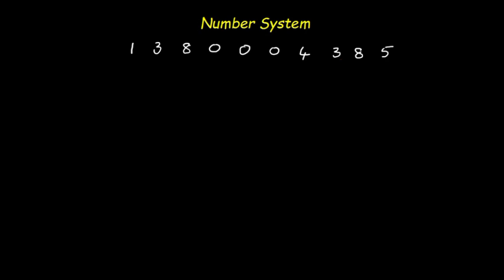Here is the number — this is the present population of India in 2020. Can you read this? Now I will show you the place of each digit using the international system. The first digit is in the ones place, the next is tens, then hundreds, thousands, and ten thousands.